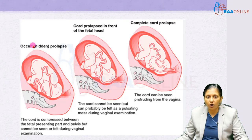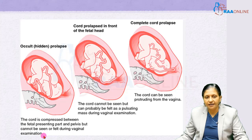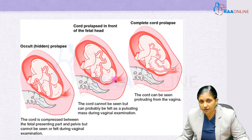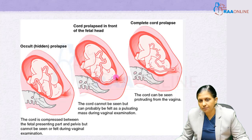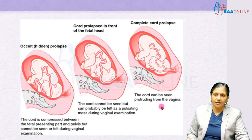There is an important difference between occult and overt prolapse. Occult prolapse, also called hidden prolapse, occurs when the cord is compressed between the fetal head and the pelvis but cannot be seen or felt on vaginal examination. Sometimes the cord is in front of the fetal head but is covered by the fetal membranes — the amnion and chorion — so it cannot be seen, but a pulsating mass can be felt on PV examination. In complete cord prolapse, the membranes are absent and the cord lies inside or protrudes from the vagina.